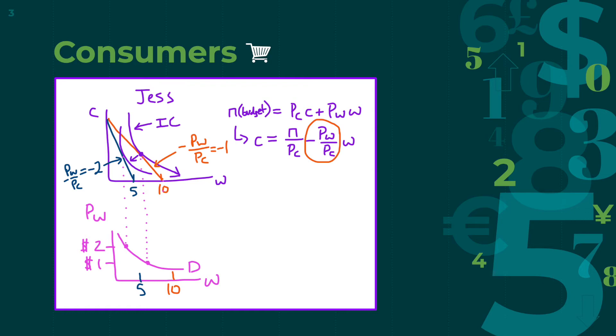Now, the consumer also has certain combos of corn and wheat consumption with which they're equally happy, called an indifference curve, or IC. Consumers want to move to the highest indifference curve possible, but it is always constrained by their budgets. An indifference curve is also tangent to the line, like the PPC is.